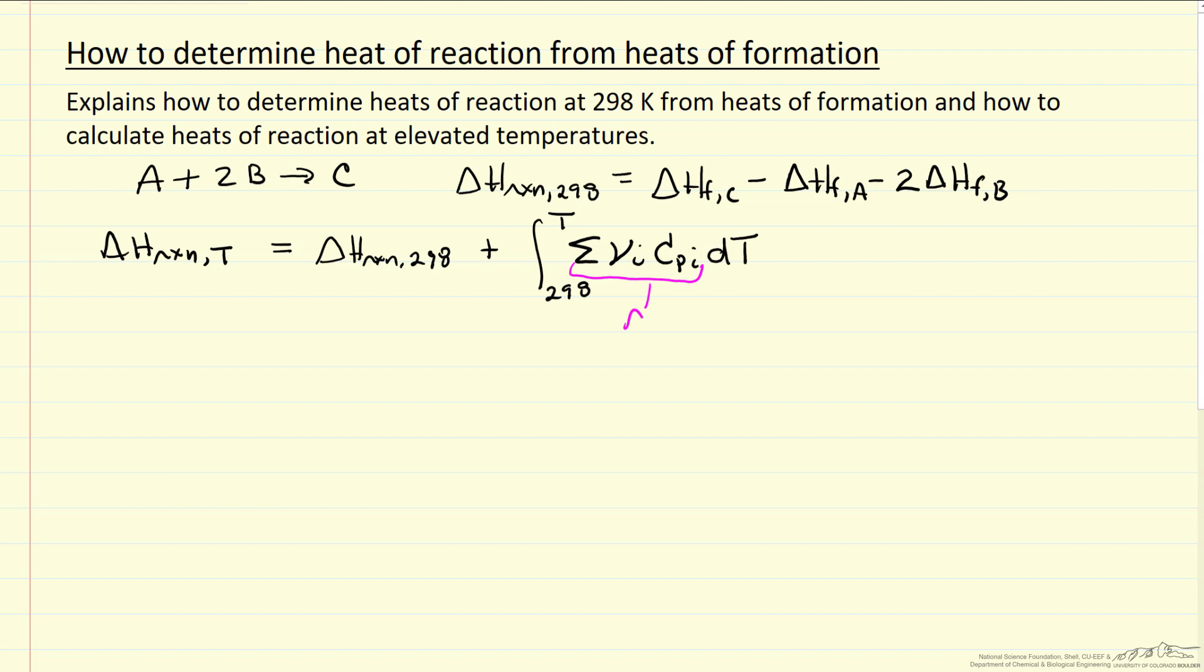And we're going to call this term delta Cp. And so this delta Cp would be heat capacity of product minus heat capacity of reactants, including the stoichiometric coefficients.